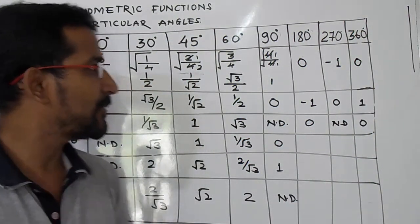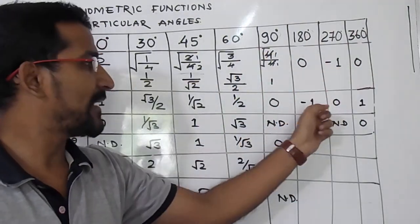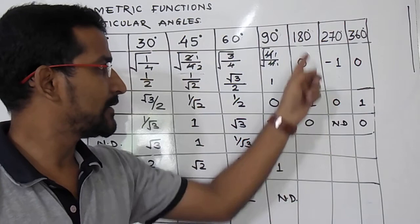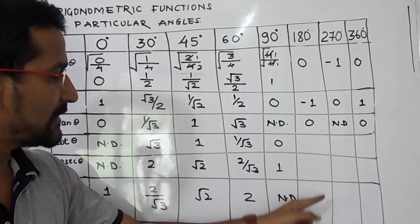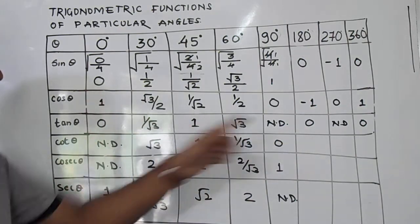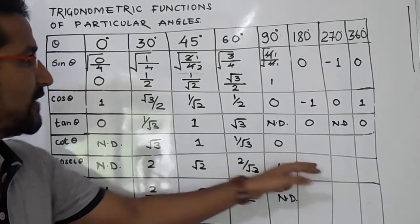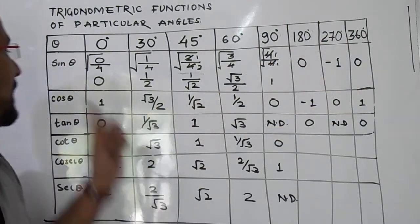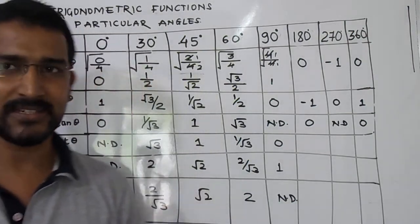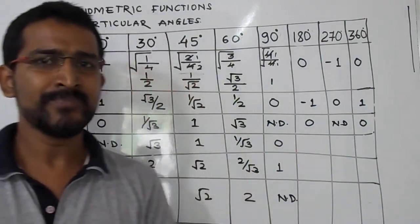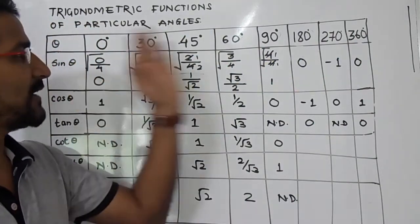This is how you can remember all the quadrantal angle values. The sin values are 0, −1, 0, and for cos: −1, 0, 1. Take the ratios for tan: 0, not defined, 0. Similarly, cot θ is the reciprocal of tan, cosec θ is the reciprocal of sin θ, and sec θ is the reciprocal of cos θ. You can complete that table very easily.